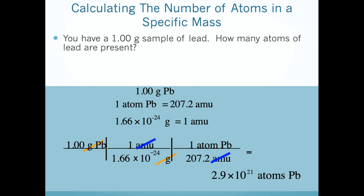If that seems like a large number, well, it is. Even though one gram doesn't seem like a very heavy mass, atoms are very small, so you can fit a lot of atoms in one gram of material. This is essentially dimensional analysis from Chapter 1 — a lot of the math in this class involves just multiplying and dividing conversion factors. When in doubt, pay attention to your units so you'll know whether to multiply or divide. Your units will always cancel out to give you the answer you need.